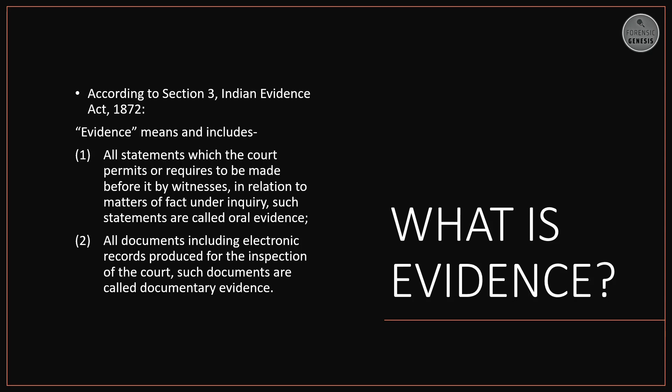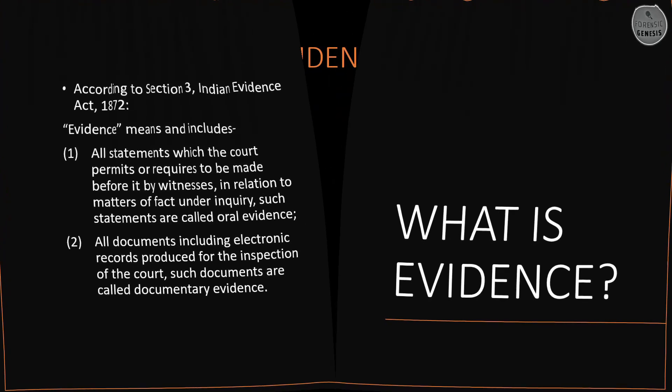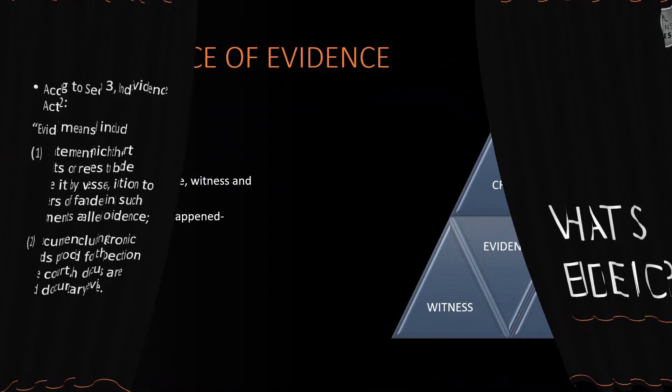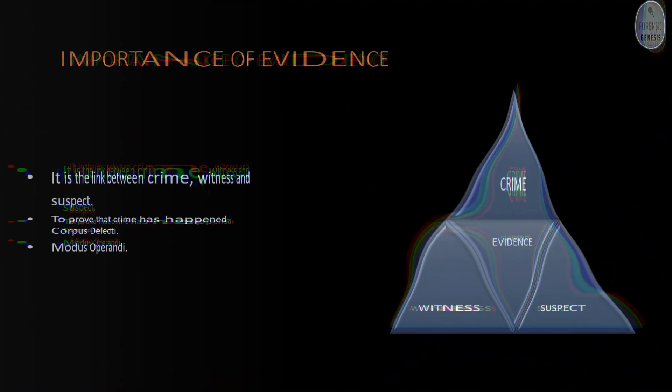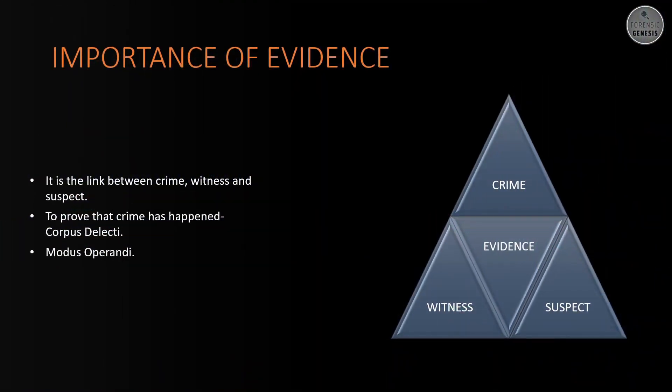In simpler words, we can say that anything which helps us to know about the crime. This takes us to the importance of evidence. It links the crime, suspect and witness. It is the only thing that has the capability to prove that a crime has happened — in technical terms, we call it corpus delicti. Also, the modus operandi, literal meaning method of operation, can be determined by evidence only.